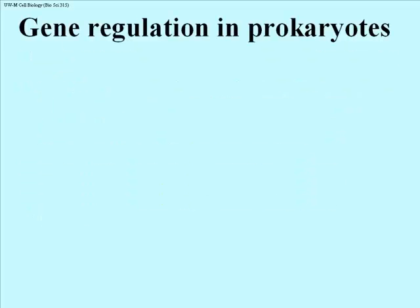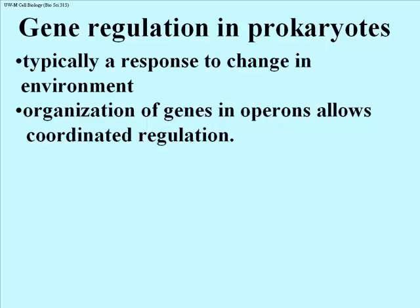Let's focus on gene regulation in prokaryotes. These of course are all single-celled organisms. These cells will regulate their genes in response to changes in environment, changes in nutrient concentration, or other factors in the environment, including toxic substances. Genes are organized often in operons — groups of three or more genes — that allows for their coordinated regulation. The genes in an operon are typically all involved in some aspect of the same biochemical pathway.